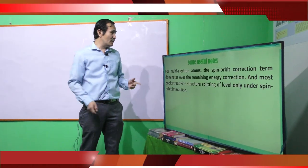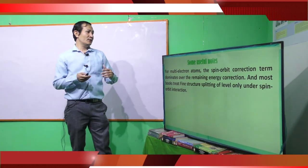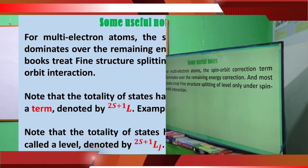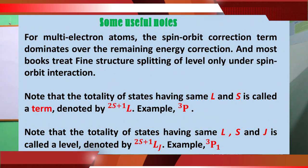For multi-electron systems, the spin-orbit correction term dominates over the other two. So in most books, when fine structure is discussed, they consider only the fine structure splitting under spin-orbit interaction and do not mention the others. Also, notation varies from textbook to textbook, so while reading you have to take care of which convention is being followed.